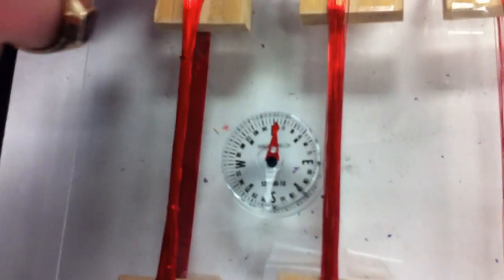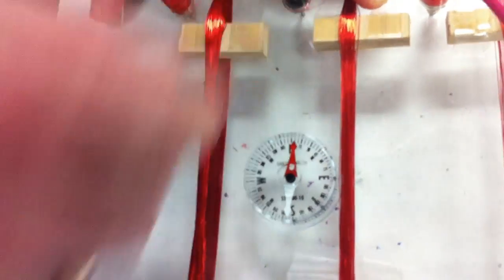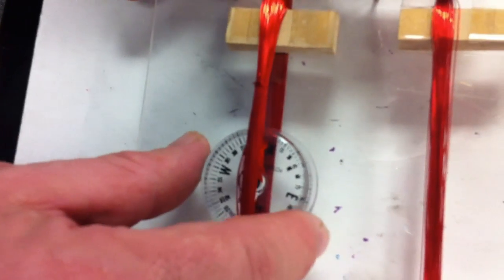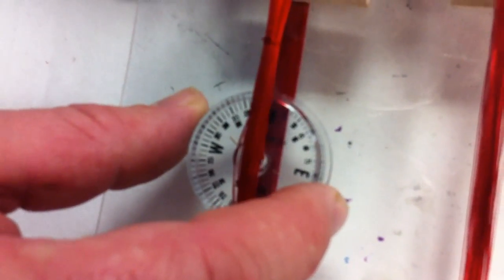Now I'll do the 100 turns. So I'm going to switch over to the 100 turns of wire. Same thing. Put it in between the loop. Get it lined up so it's directly north.